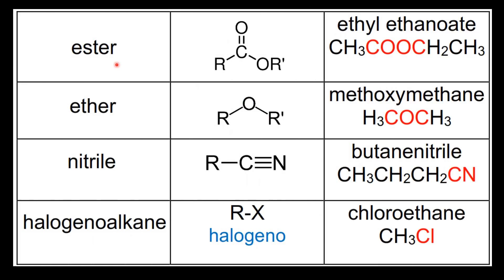Next we have the esters — this is the ester functional group — an example is ethyl ethanoate. Next we have the ethers — this is the ether functional group — an example is methoxymethane.